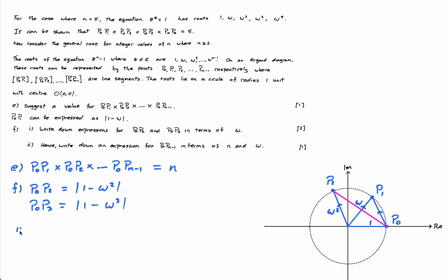Okay, and then f part ii, it says hence, write down an expression for p0 p n minus 1 in terms of n and omega. Again, this is only worth one mark, and I'm guessing you could probably do it if you've done these two.